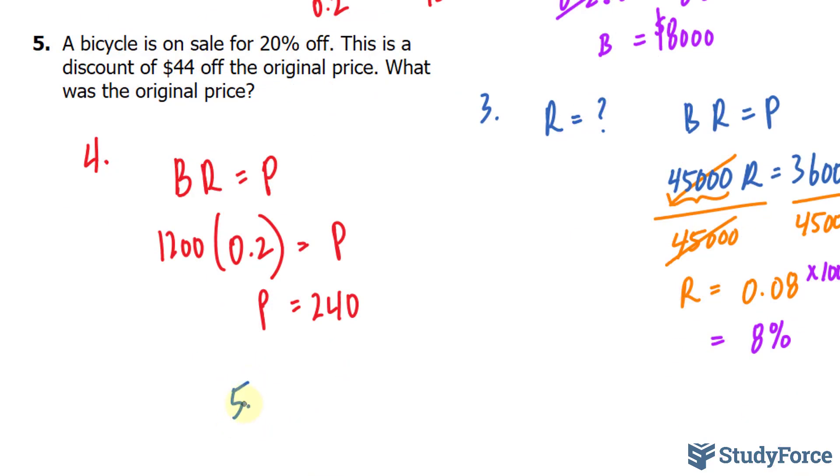Finally, in question number five, a bicycle is on sale for 20% off. This is a discount of $44 off the original price. What was the original price? So this $44 represents the discount. That's the portion of the unknown original price that is 20%. Because we don't know the original price or the base value, we'll leave it as B. Our rate, given that it's 20%, is 0.2. And 20% of the original gives us $44. That's your portion.